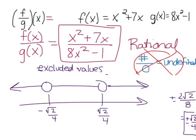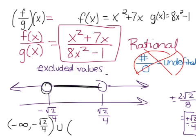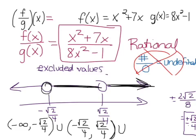Our domain goes from left to right. So the domain is: negative infinity to negative square root of 2 over 4 (parentheses, since we cannot equal that value), union, negative square root of 2 over 4 to positive square root of 2 over 4 (parentheses), union, positive square root of 2 over 4 to positive infinity. This is our domain.